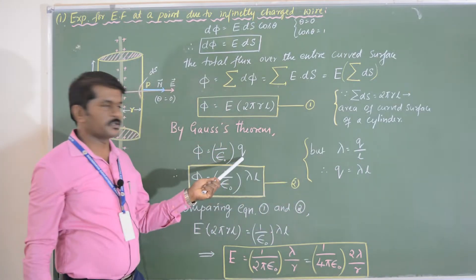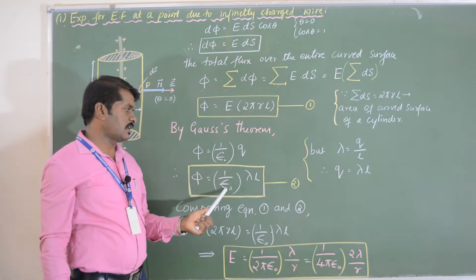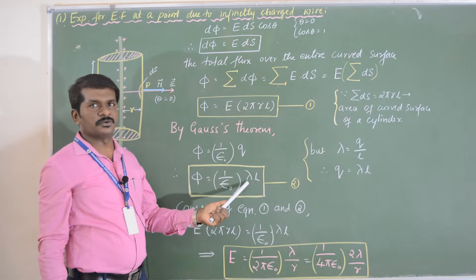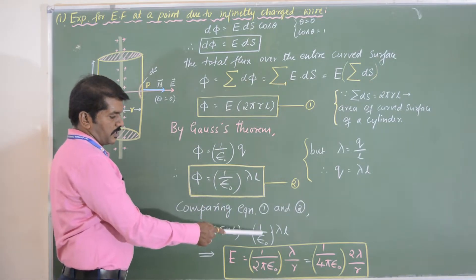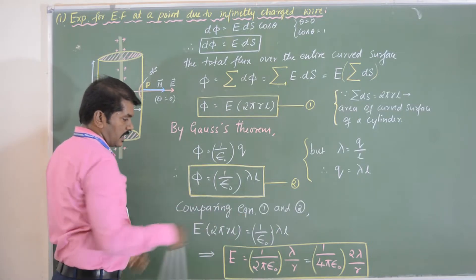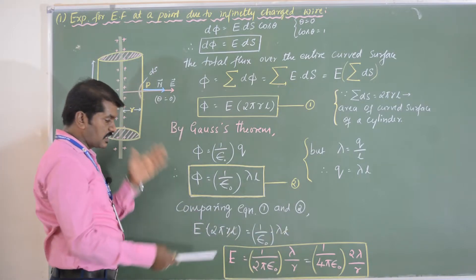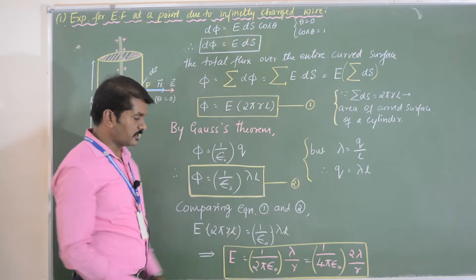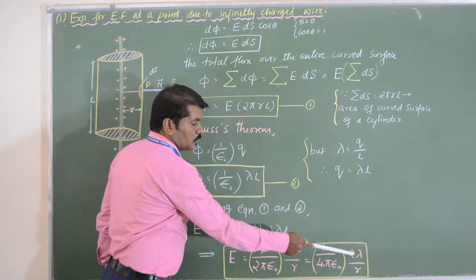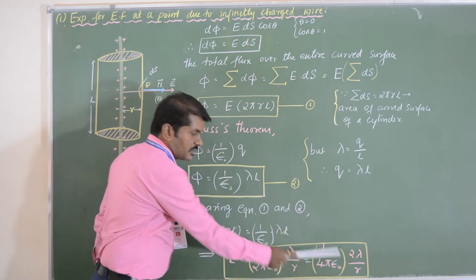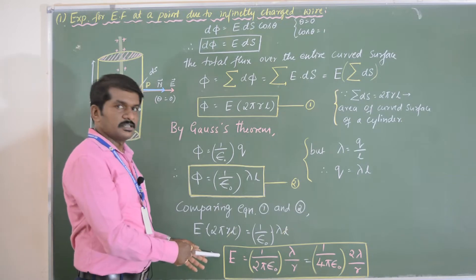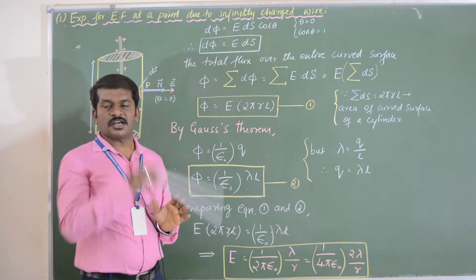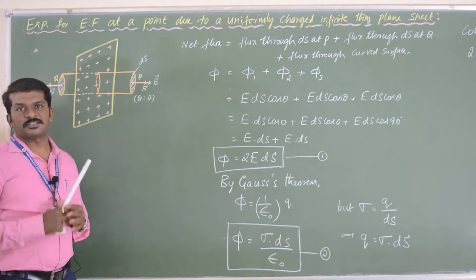Substituting Q equals lambda·l into the Gauss theorem expression gives phi equals lambda·l by epsilon naught — call this equation 2. Comparing equations 1 and 2: E into 2πrl equals lambda·l by epsilon naught. Cancelling l from both sides, we get E equals lambda divided by 2π epsilon naught r, or equivalently E equals (1/4π epsilon naught) times 2 lambda by r. This is the expression for electric field intensity at a point near an infinitely charged wire.